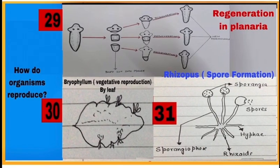29 is regeneration method of asexual reproduction in planaria. It is also found in hydra. 30 is showing vegetative propagation by leaf in bryophyllum. 31 is showing spore formation in rhizopus or bread mold, where sporangium is the reproductive part while hyphae are the non-reproductive part of rhizopus.